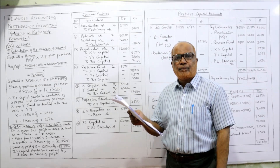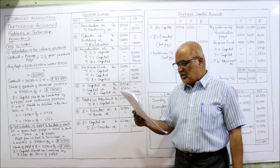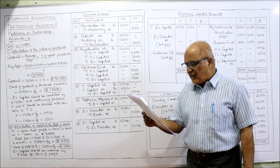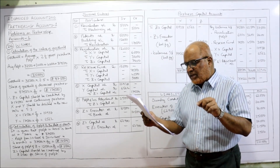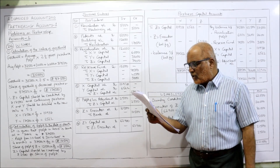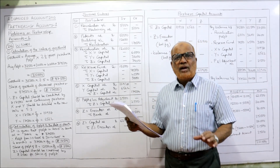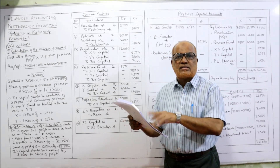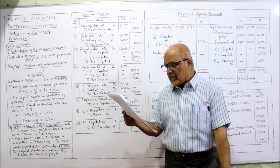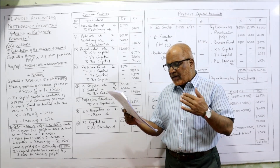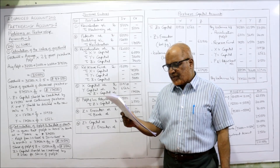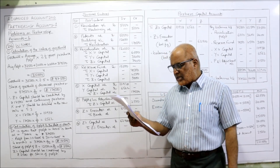Building at 62,500 — balance sheet value was 50,500, so building value is appreciated. For calculating Z's share of profit in 2005, the profit should be taken as the same as in 2004, that is 37,500. A sum of 10,500 is paid immediately to the executors of Z, and the balance to be paid in four equal half-yearly installments together with interest at 10% per annum.